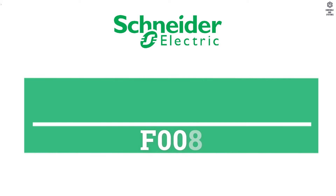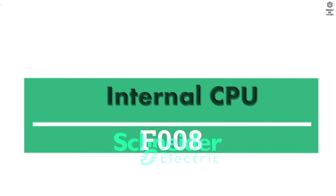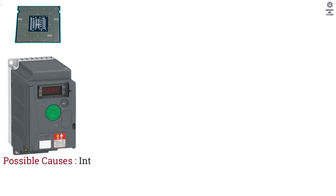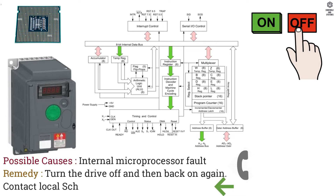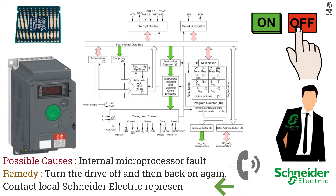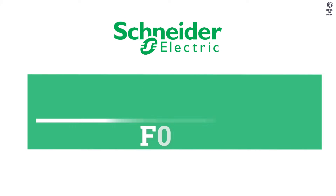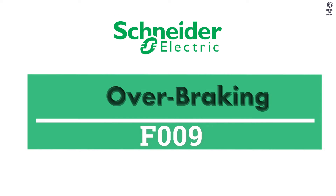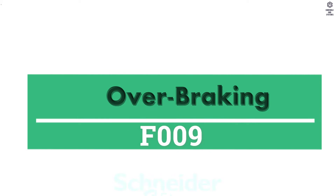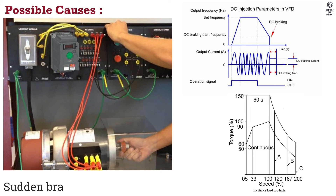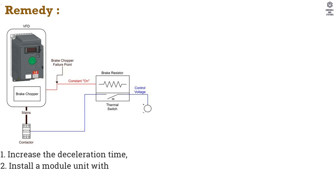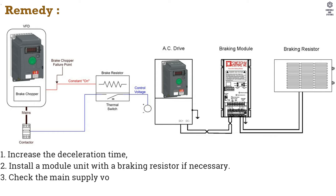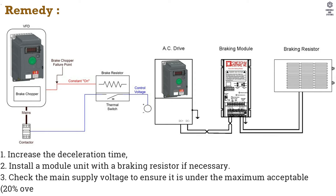F008 Internal CPU. Possible Causes: Internal Microprocessor Fault. Remedy: Turn the drive off and then back on again. F009 Overbraking. Possible Causes: Sudden Braking or Load Inertia Too High. Remedy: Increase the Deceleration Time. Install a Braking Module Unit with a Braking Resistor if necessary.